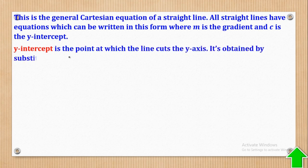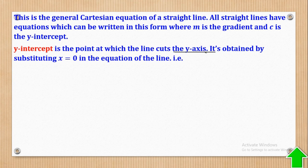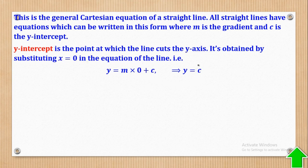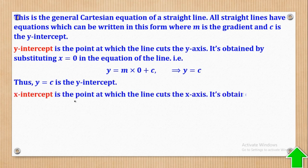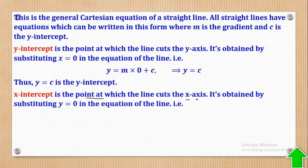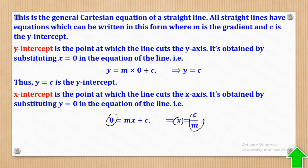What is the y-intercept? The y-intercept is the point at which the line cuts the y-axis, and it is obtained by substituting x equal to 0. If I have y = mx + c and put x = 0, I get y = c. What about the x-intercept? The x-intercept is the point at which the line cuts the x-axis, and is obtained by substituting y = 0 in the equation and making x the subject.